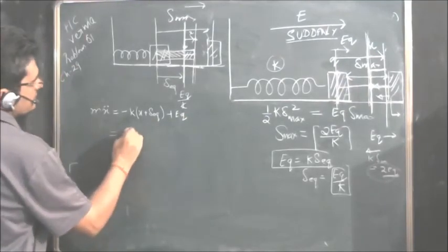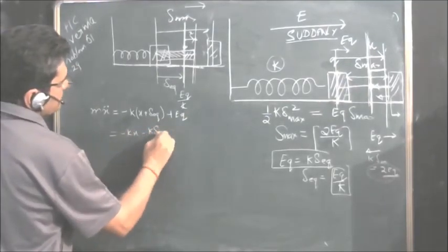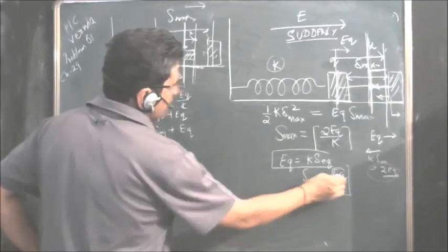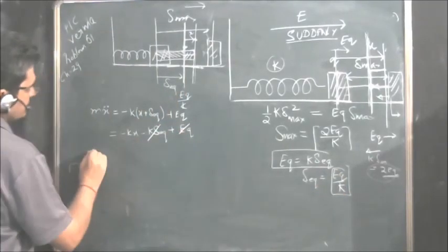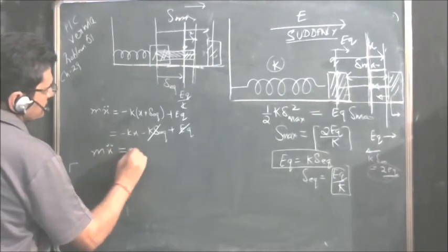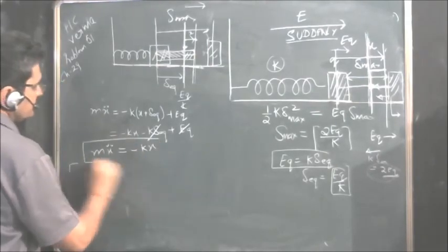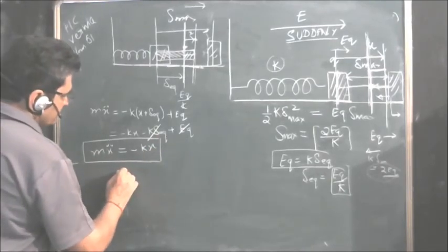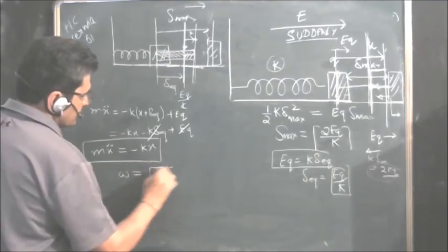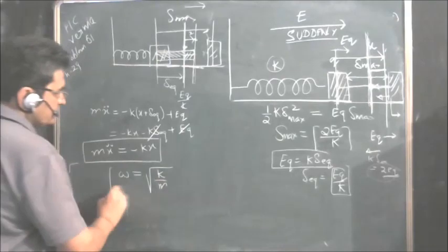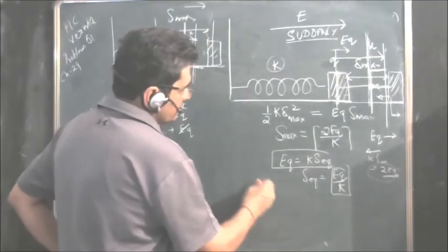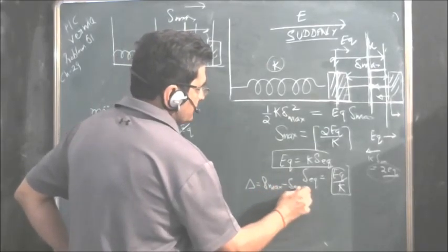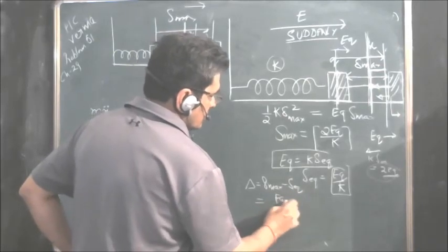The spring force opposing the motion is minus K times (x plus delta equilibrium), and the electric force helping the motion is plus EQ. This gives M x double dot equals minus Kx minus K delta equilibrium plus EQ. Since K delta equilibrium equals EQ, these two terms cancel, leaving M x double dot equals minus Kx — which is the equation of simple harmonic motion. Therefore omega equals root of K upon M, and the amplitude is delta maximum minus delta equilibrium, which equals EQ upon K.